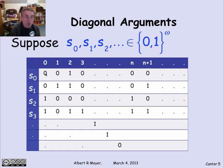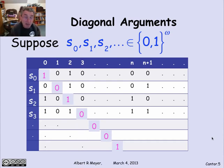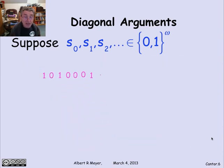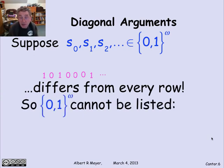You look at the first digit — that was a 0 — so you choose the first digit of the new sequence to be 1, the opposite. You choose the second digit to be the opposite of digit 1 of S1. Here, digit 2 of S2 is a 0, so make that a 1. The next one on the diagonal is a 0, and so on. We're going to complement all of the bits along this diagonal, getting a diagonal sequence. This sequence differs from every row — it differs from the 15th row at position 15, from the 99th row at coordinate 99. It's not a row of the matrix.